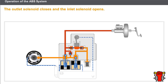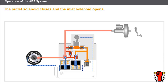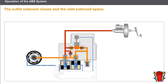Now let's look at the pressure re-increase phase. The outlet solenoid closes and the inlet solenoid opens. The master cylinder is reconnected to the brake caliper, and once again the pressure increases and the wheel returns to its slip point. The faster the regulation frequency, the finer the regulation in braking pressure. Current systems can produce between 30 and 50 pulses per second.